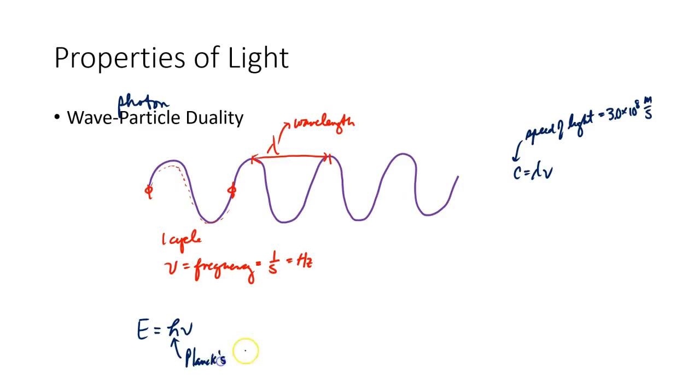I'll let you look up Planck's constant on your own. Notice that both of these equations have nu, the frequency in common, so we can rearrange this equation for nu, that equals c over lambda, and we could plug that in and get another equation for energy. That would be hc over lambda.